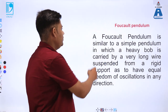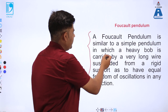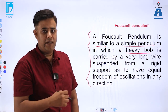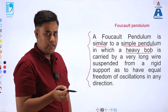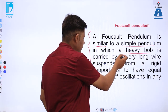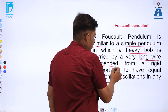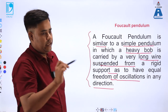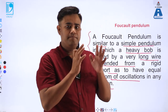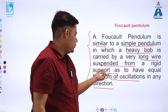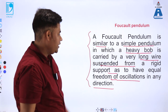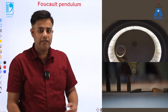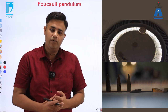Coming to the definition: a Foucault's pendulum is similar to a simple pendulum, having a heavy bob of around 30 to 40 kg carried by a very long wire suspended from a rigid support, to allow equal freedom of oscillations in any direction. The video on the right shows a Foucault's pendulum with a heavy bob attached to a string.